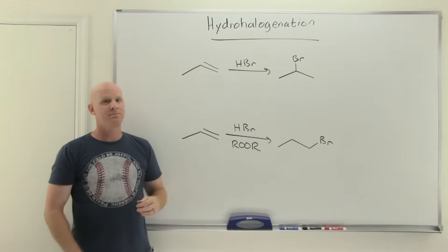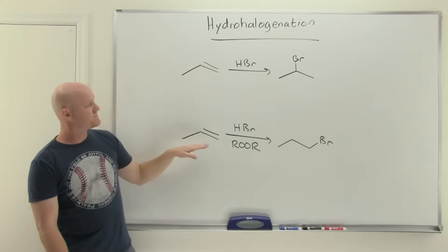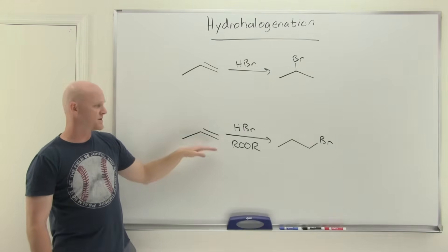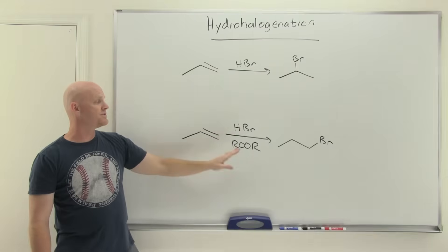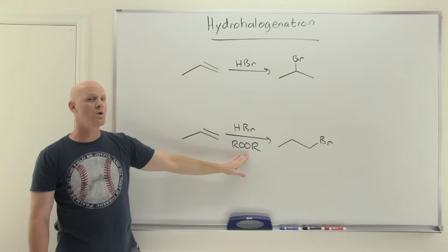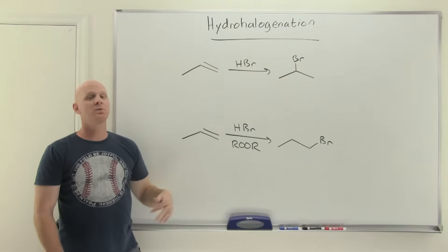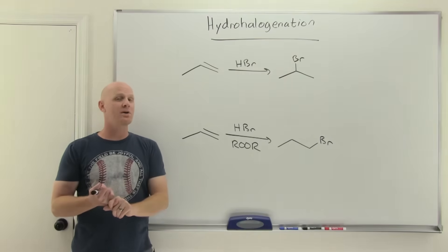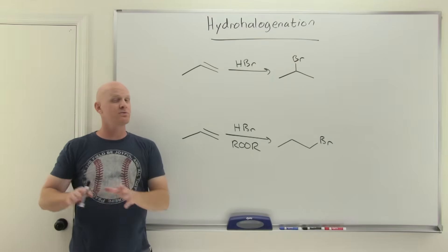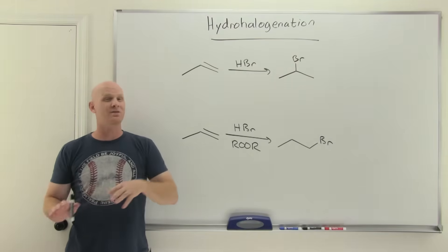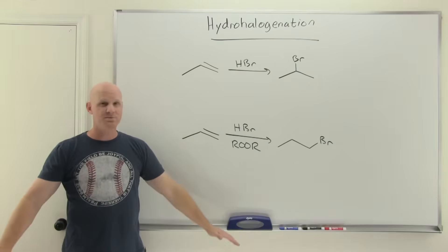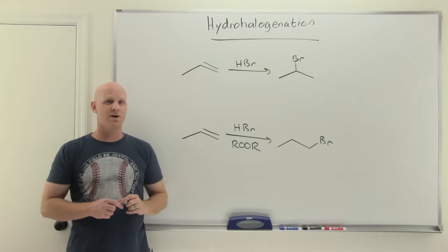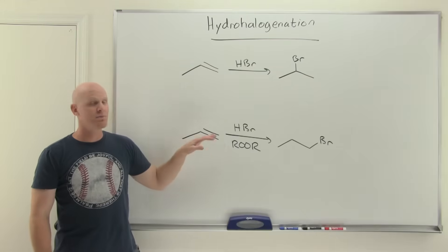There is one special case with HBr specifically — this does not apply to HCl or HI. With HBr, if you add a peroxide (ROOR), it will go through a totally different mechanism and will go anti-Markovnikov. This mechanism involves radicals instead of a carbocation, so no rearrangements occur, and there is also no stereoselectivity with this version.